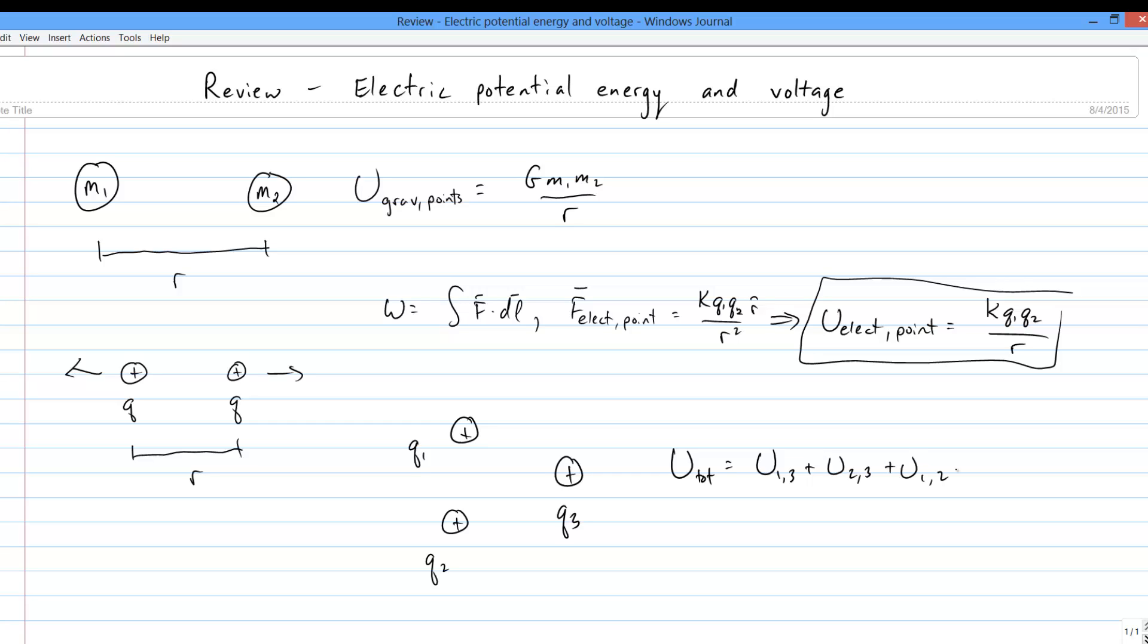So given three charges Q1, Q2, and Q3, the total potential energy involves terms for 1 and 3, 2 and 3, and 1 and 2.